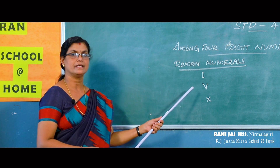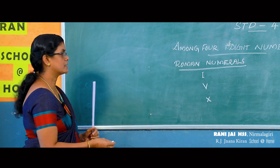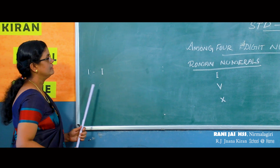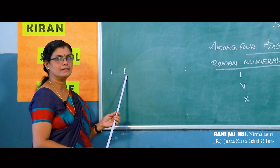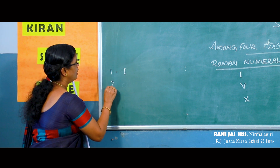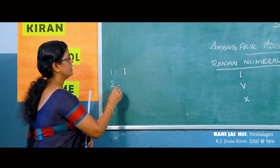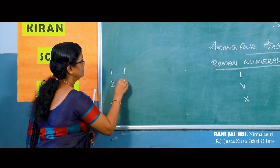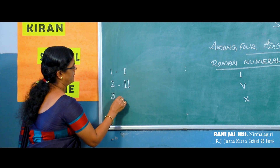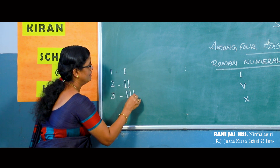Let us see how we can write the numbers from 1 to 10 using these 3 alphabets. Suppose you are to write the number 1 — then you write I. The English alphabet I is used to denote 1 in the Roman number system. Now how to write 2? That is 1 plus 1, so you can write two I's: II. This is 2. Now 3 — we can write three I's: III.